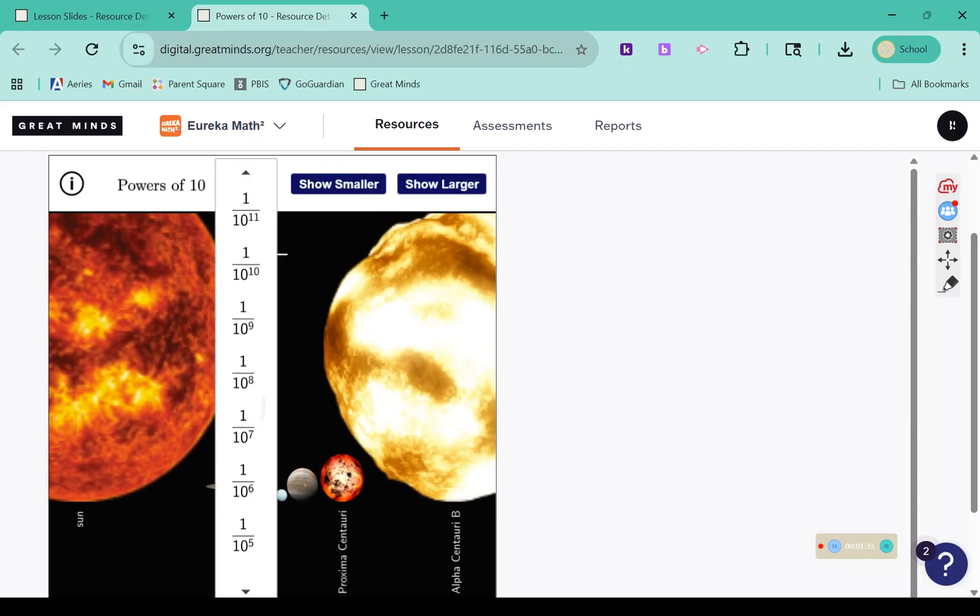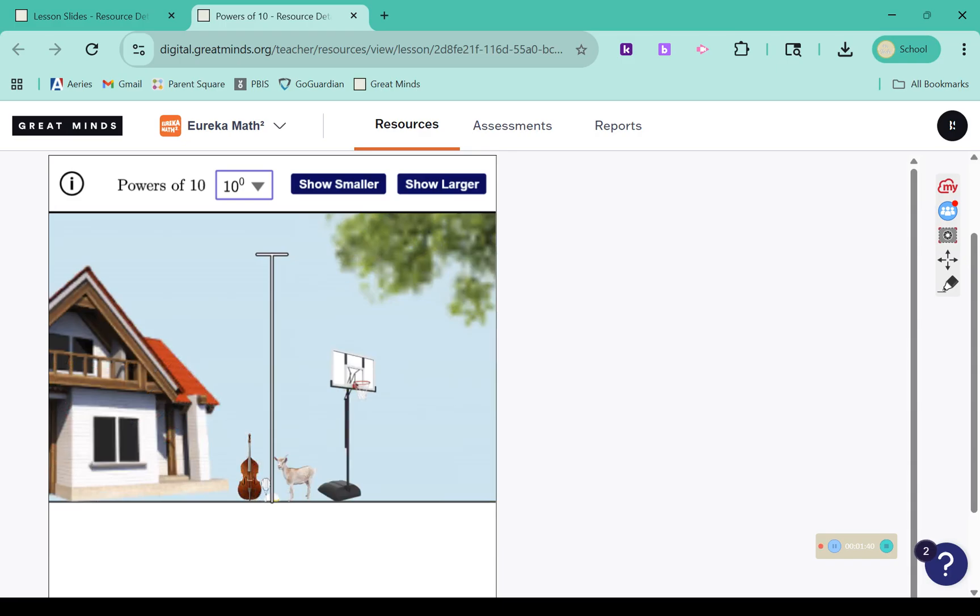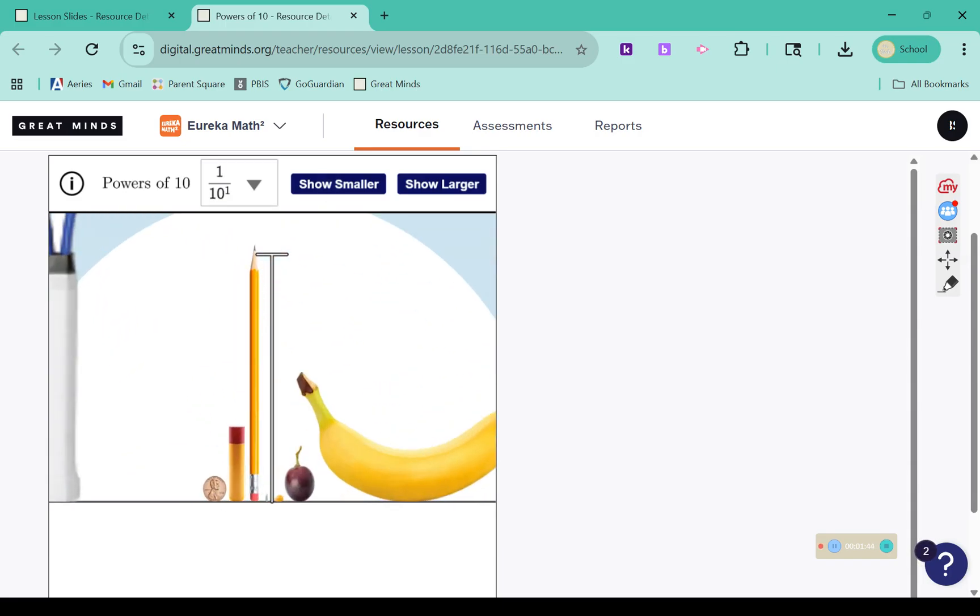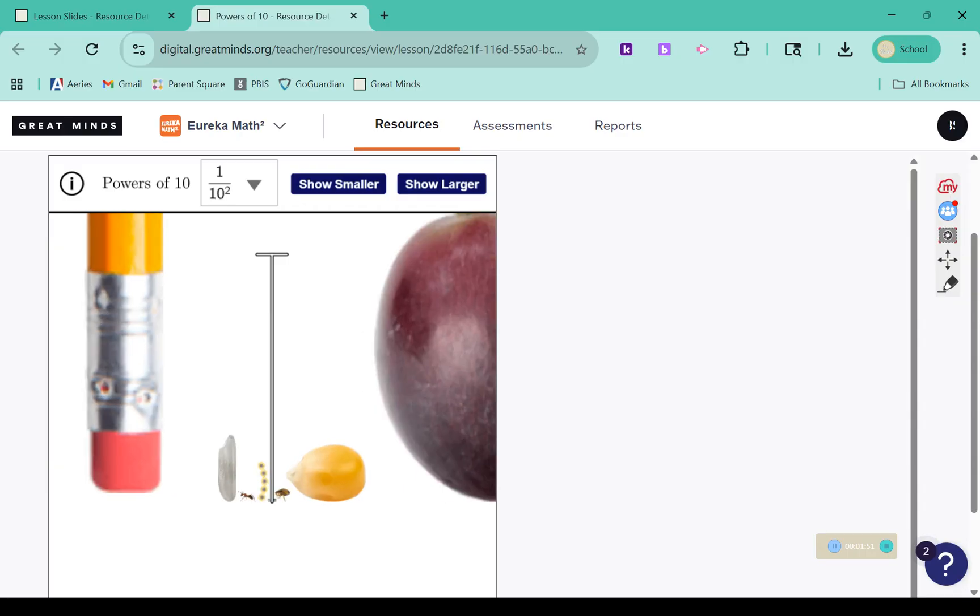If we go into the smaller version of these exponents, so going back to the start. As we get smaller, you can see we have 1 over 10 to a power. We're talking about decimals or fractions here, getting smaller and smaller.